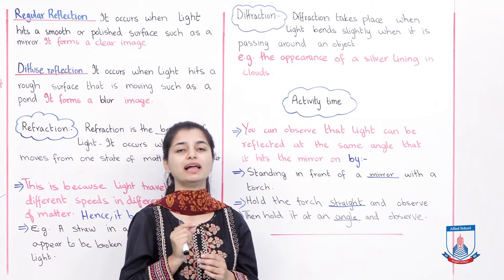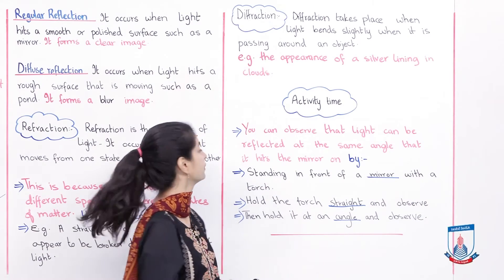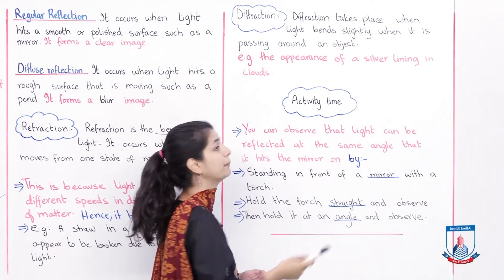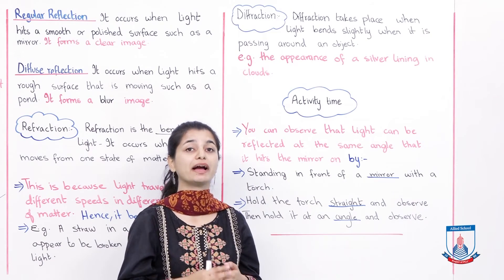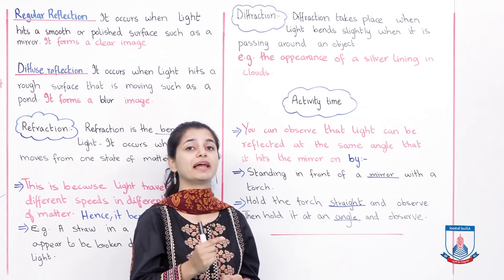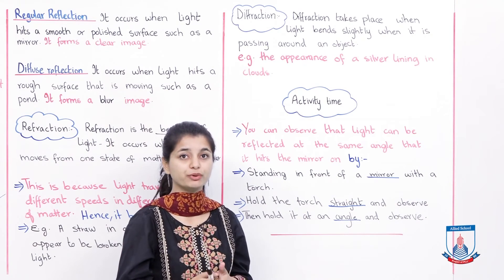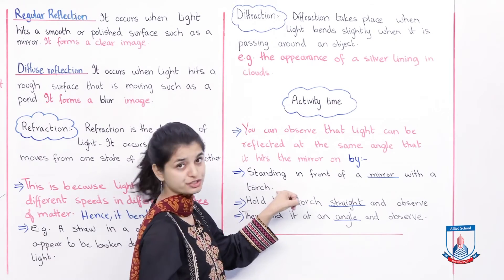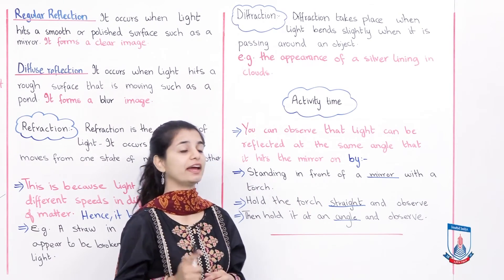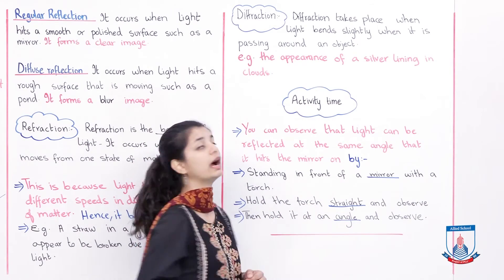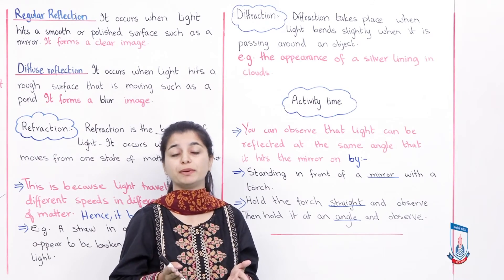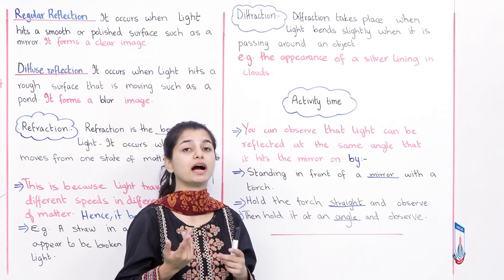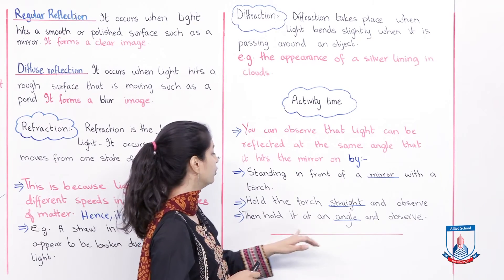What I want you to do now is conduct a small activity from the textbook. You can observe that light can be reflected at the same angle that it hits the mirror. You can stand in front of a mirror with a torch — hold the torch straight and observe which direction the light reflects. The angle of reflection is the same as the angle at which light hits.